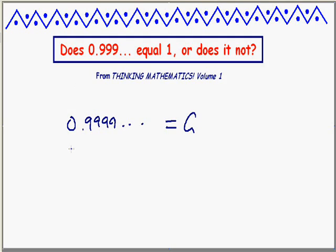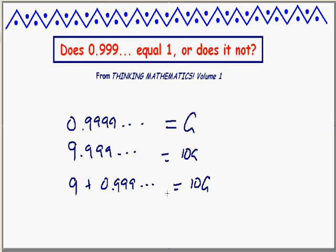All right, here's Georges. Apply the same algebra. Let's multiply both sides by ten. 9.99... forever would be ten Georges. Well, what is 9.999...? Well, it's really nine plus my original guy. That's still ten Georges. So I've got nine plus Georges is ten Georges.